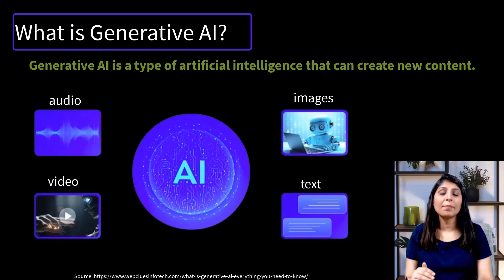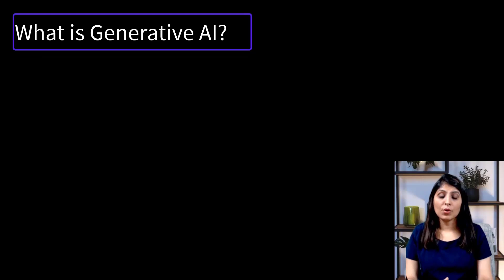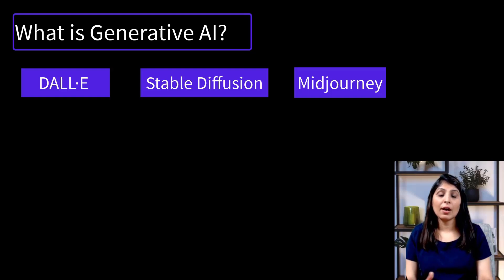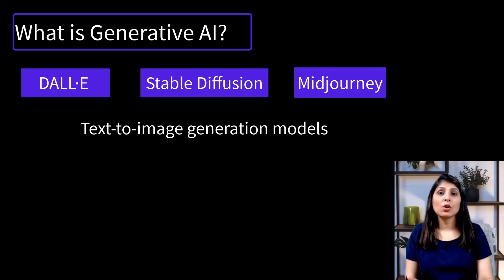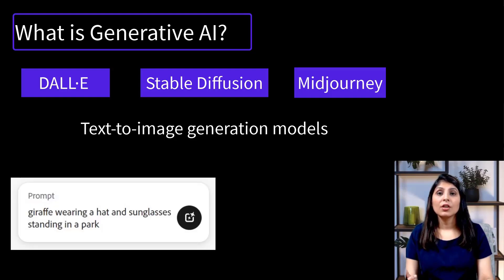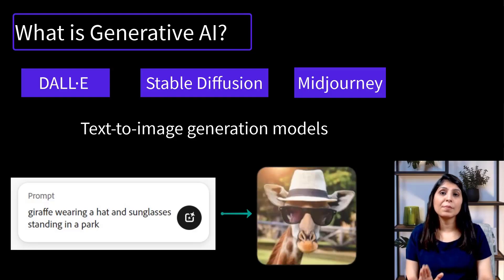ChatGPT is a very popular example of generative AI, but before ChatGPT became popular, models like DALL-E, Stable Diffusion, and MidJourney were leading the field of generative AI by creating images. All these models are text-to-image generation models. Text-to-image generation models take input in the form of text prompts and produce an output matching the description. For example, if you write a prompt saying 'giraffe wearing a hat and sunglasses standing in a park,' the model will generate an image that visually represents that description.